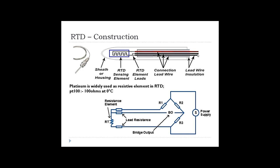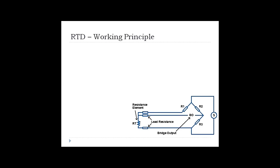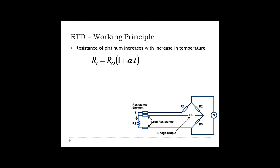The resistance is converted into electrical output very similarly to the strain gauge bridge circuit discussed in the last video. The RTD has three leads — current enters and flows through the RTD through R1, then it comes out. The RTD resistance is connected in a bridge circuit and this output is the final electrical output. The resistance of platinum increases with an increase in temperature, so RTD is used to measure temperature — as we increase heat supply, resistance also increases.